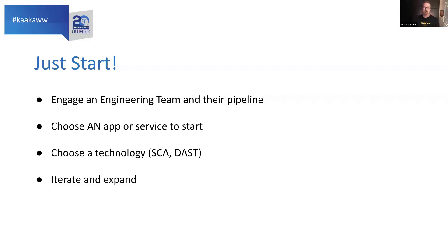Start with a small engineering team. Help become their partner, give them information, choose an application and their CI/CD pipeline, get them the information they need. Choose a technology — I personally like SCA and DAST because those two things are actionable in two different ways and give you really good information. Once that's working, iterate and expand to the rest of the organization. They'll probably become your champions; if you do it well, they'll talk to their other development partners and say, 'Actually, the application security team is helping us — we're going faster and producing better code. You should talk to those folks.'